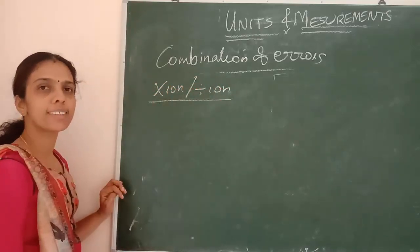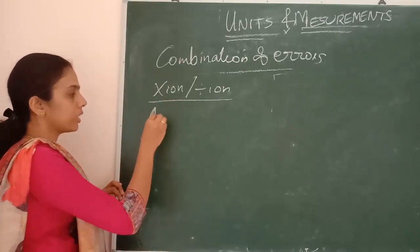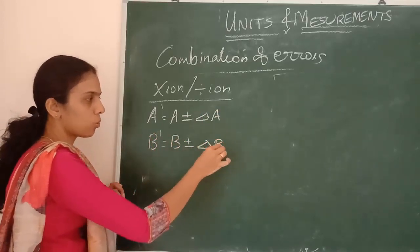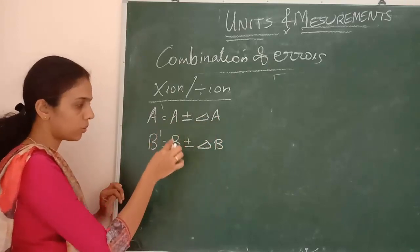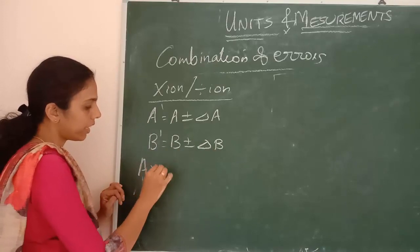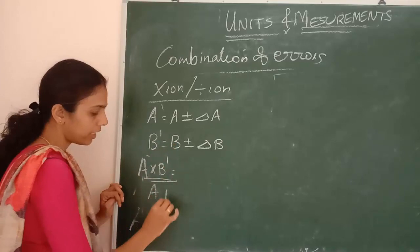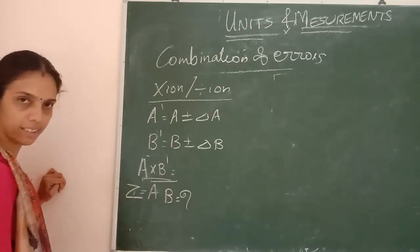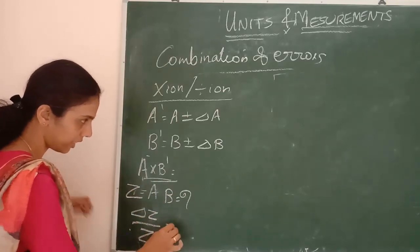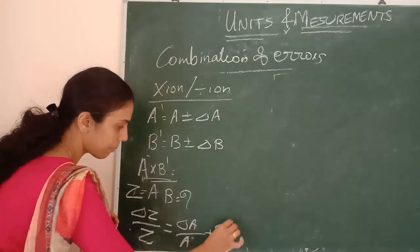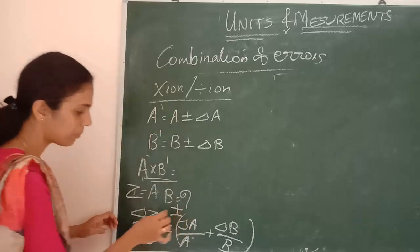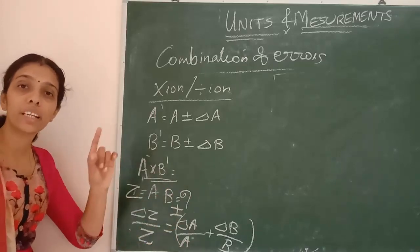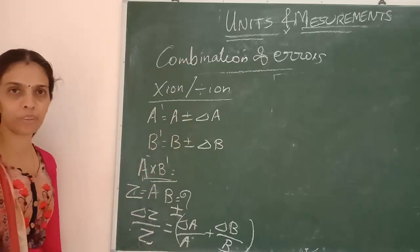If we are multiplying or dividing the quantities, what will happen? Suppose A dash equals A plus or minus delta A, and B dash equals B plus or minus delta B. I am finding out A dash into B dash. Taking Z equals A into B, then delta Z by Z equals delta A by A plus delta B by B. That will be the error.